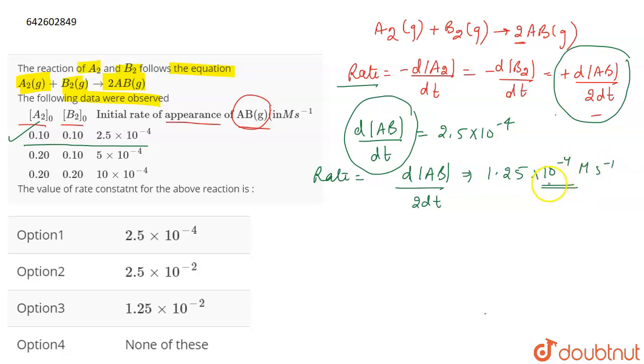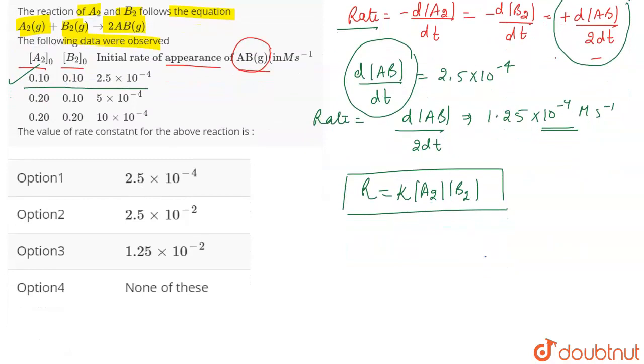So, from here, you have the value of rate. Now, if we write the rate law expression for this reaction, that will be K concentration of A2, concentration of B2. This is how we will be expressing the rate of the reaction.